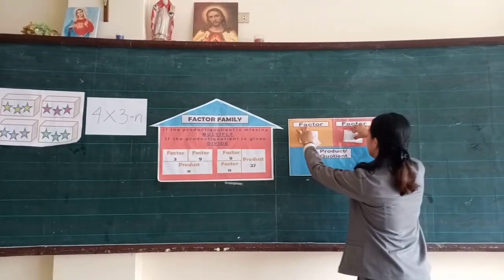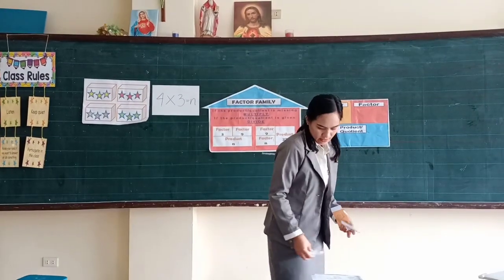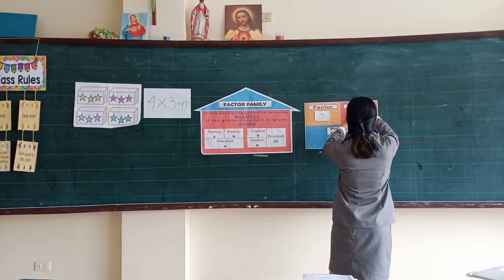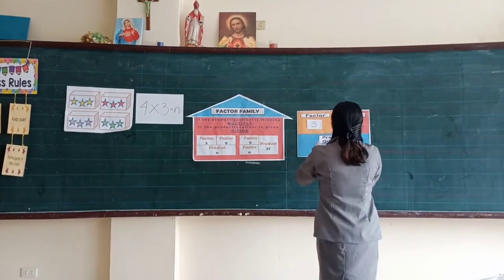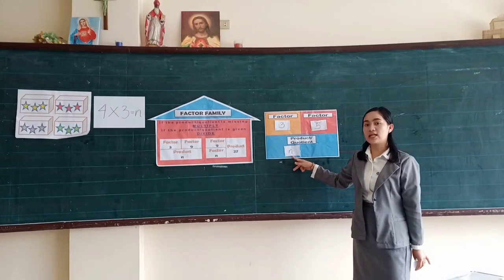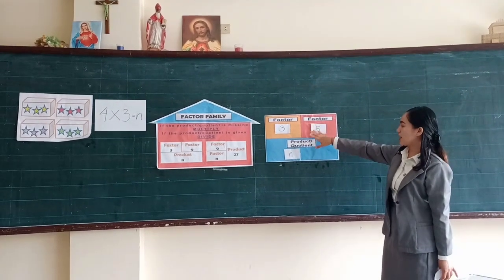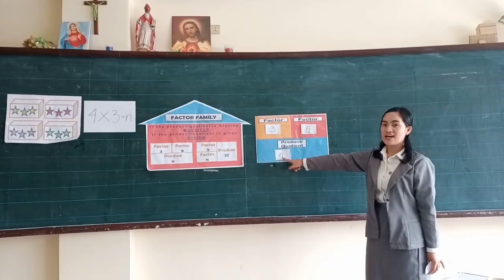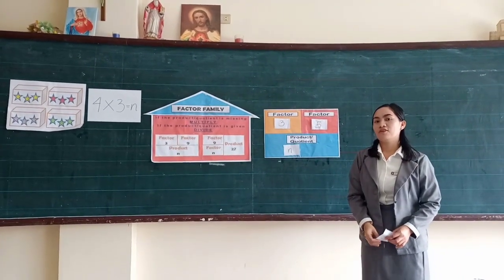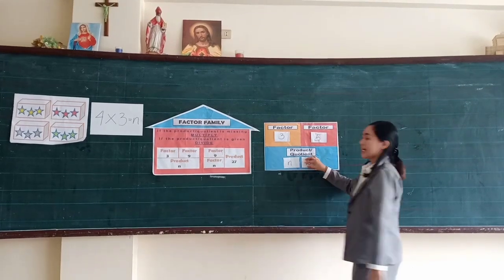Another example. We have three, five, and N. What is the value of this N? In order to find the value of N, we need to consider the two known numbers, which are three and five. Since the product or the quotient is missing, we have to multiply. Three times five equals — very good — 15. So, the value of N for this equation is 15.